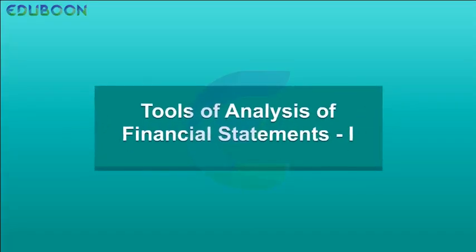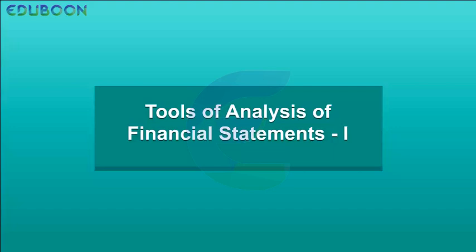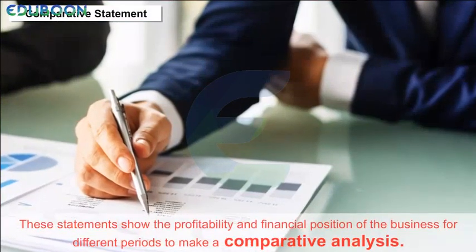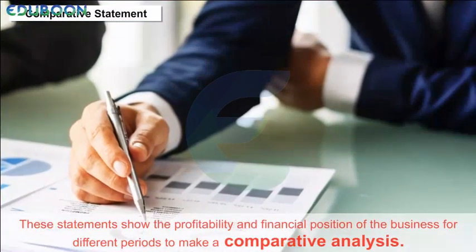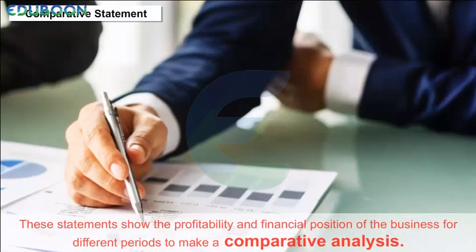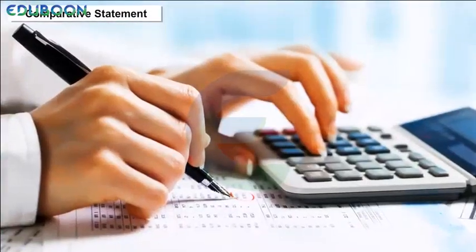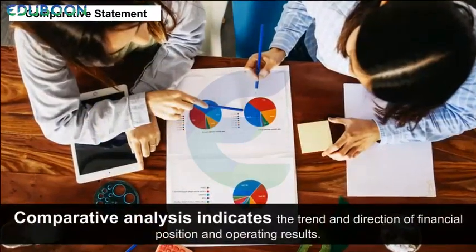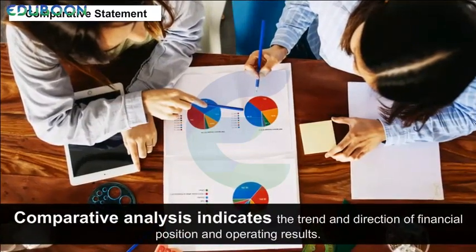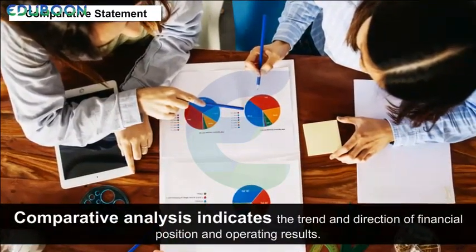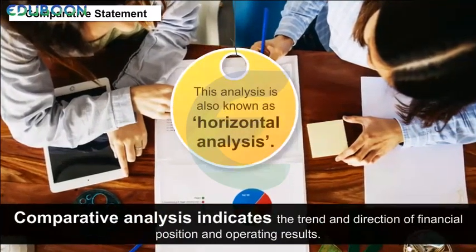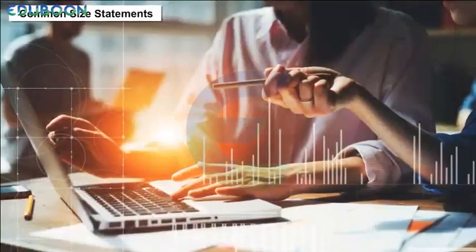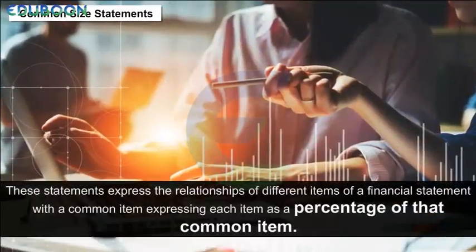Tools for Analysis of Financial Statements — Comparative Statements: These statements show the profitability and financial position of the business for different periods to make a comparative analysis. They are usually done on the profit and loss account and balance sheet. Comparative analysis indicates the trend and direction of financial position and operating results.